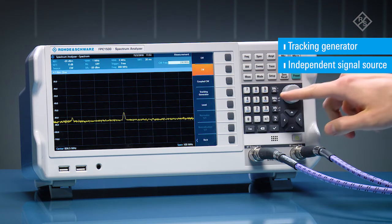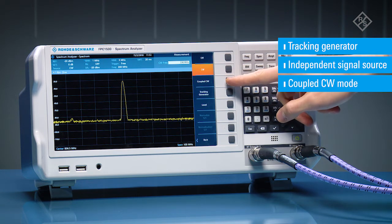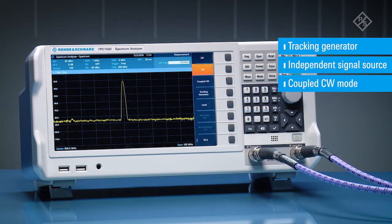The other mode is the special coupled mode in which the CW signal is locked to the center frequency setting of the FPC-1500 and automatically follows it.